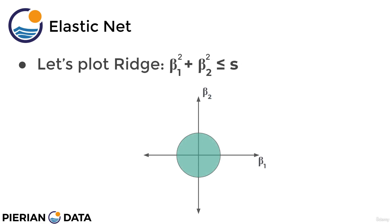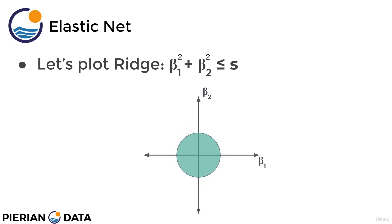For ridge regression, minimizing RSS subject to β₁² + β₂² ≤ s is going to look like a circle when we plot β₂ versus β₁. So essentially we have a circle when we're dealing with two features, and you can imagine you'd have a sphere for three features — and then they're called hyperspheres for higher and higher dimensions. For a different set of features, maybe your s region is larger, but the main idea is that in the case of two dimensions, this is going to look like a circle.